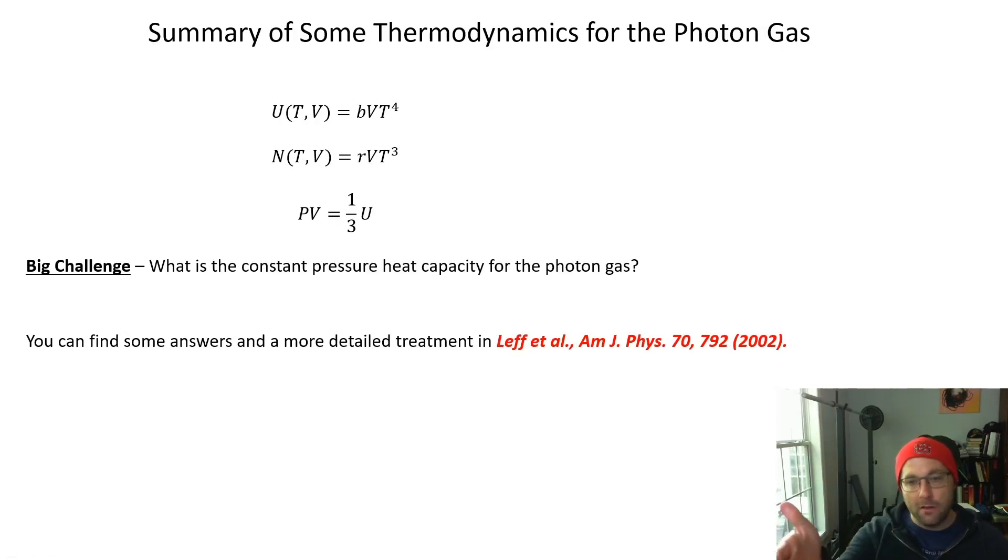These are a summary of the results for the thermodynamics of a photon gas. You really need to work through some of this by yourself and think through some different things. Internal energy is some constant times VT to the fourth, particle number is some constant times VT cubed. Looking at this you can get a feeling for what's going on: N can't really be an independent variable because it's a function of T and V. Anytime you're changing T you're automatically changing N. We're also able to show using the thermodynamic definition of pressure that PV equals one-third U for the ideal photon gas.